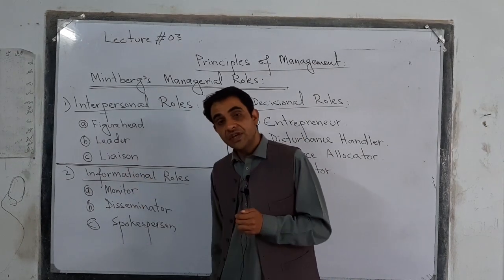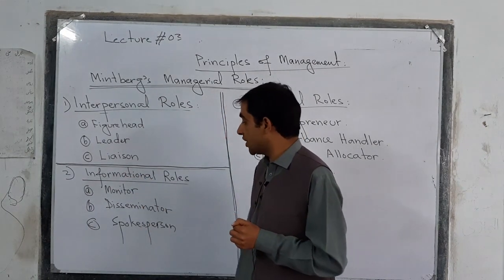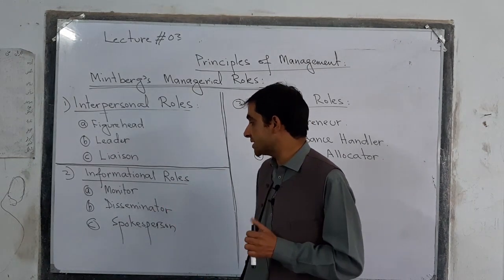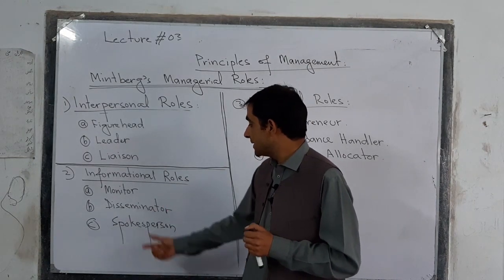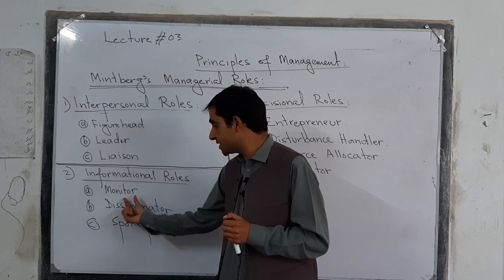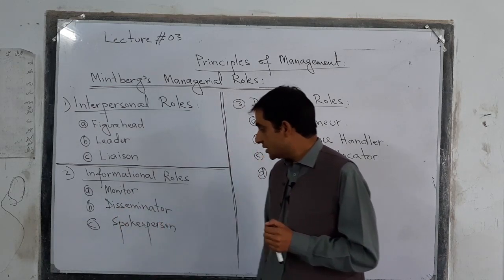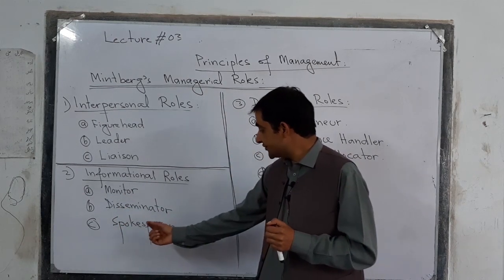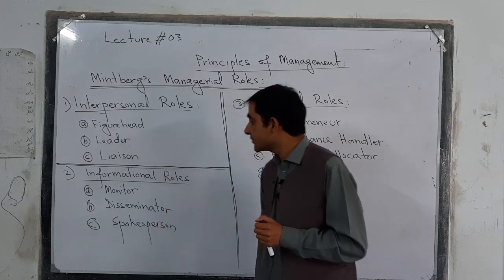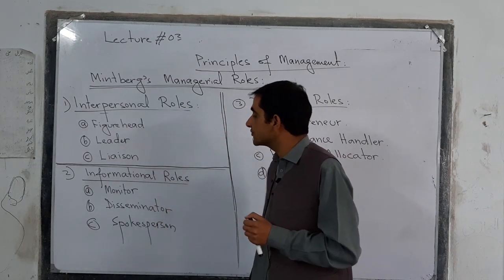Number two, we have informational roles. In informational roles, we have three sub-roles: number A, monitor role; number B, disseminator role; number C, spokesperson role. These three are called informational roles.